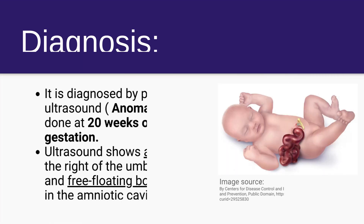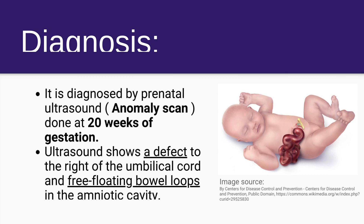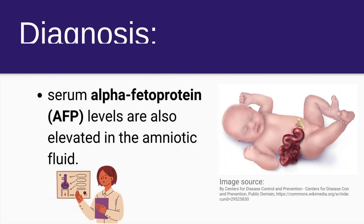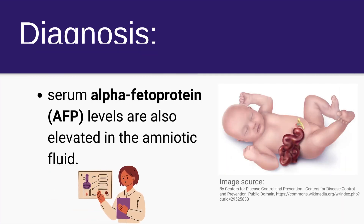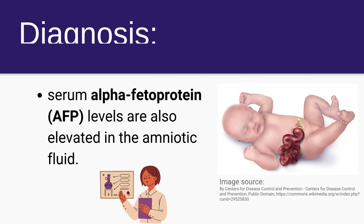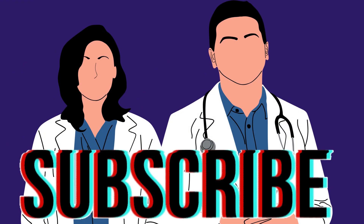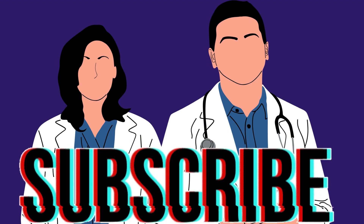How is it diagnosed? It is diagnosed by prenatal ultrasound, also known as the anomaly scan, done at 20 weeks of gestation. Ultrasound shows a defect to the right of the umbilical cord and free-floating bowel loops in the amniotic cavity. Serum alpha-fetoprotein levels are also elevated in the amniotic fluid.